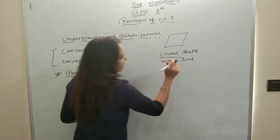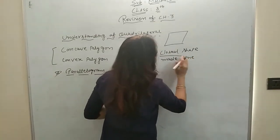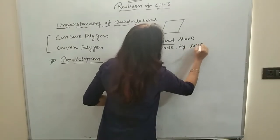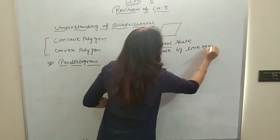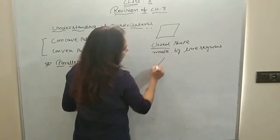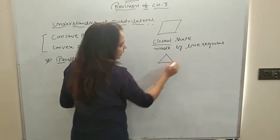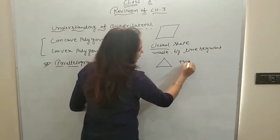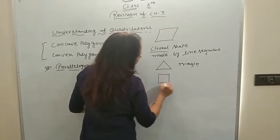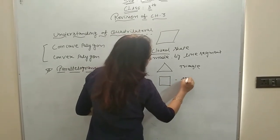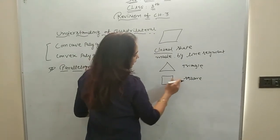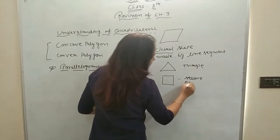We call a closed figure made by line segments a polygon. So if you have a question about the polygon's definition, the polygon's definition is simple. Starting from triangle — if you have three sides, it is a triangle. And next, if you have four sides, then it is a square or quadrilateral. The shape doesn't need to be a square specifically — it depends on the configuration.